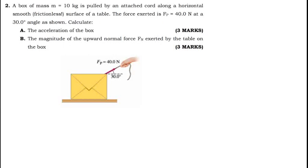So we have question 2 which says a box of mass M equal to 10 kg is pulled by an attached cord along a horizontal smooth frictionless surface of a table. The force exerted is Fp which is 40 N at an angle of 30 degrees as shown in the figure below.